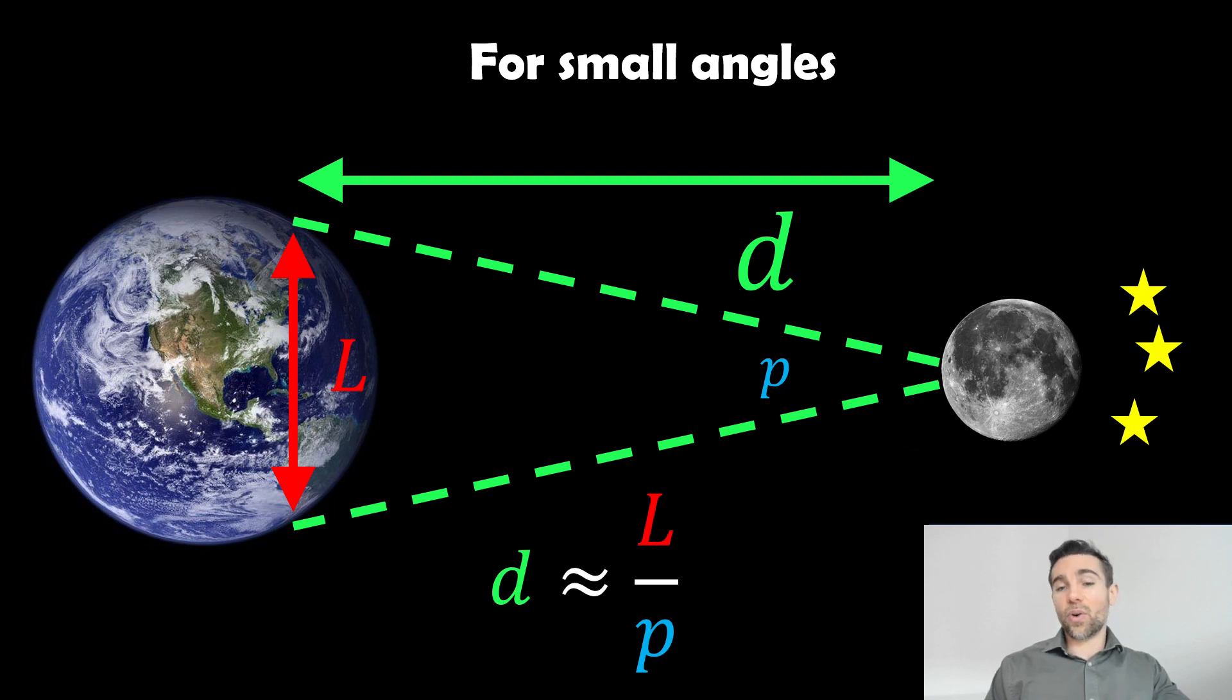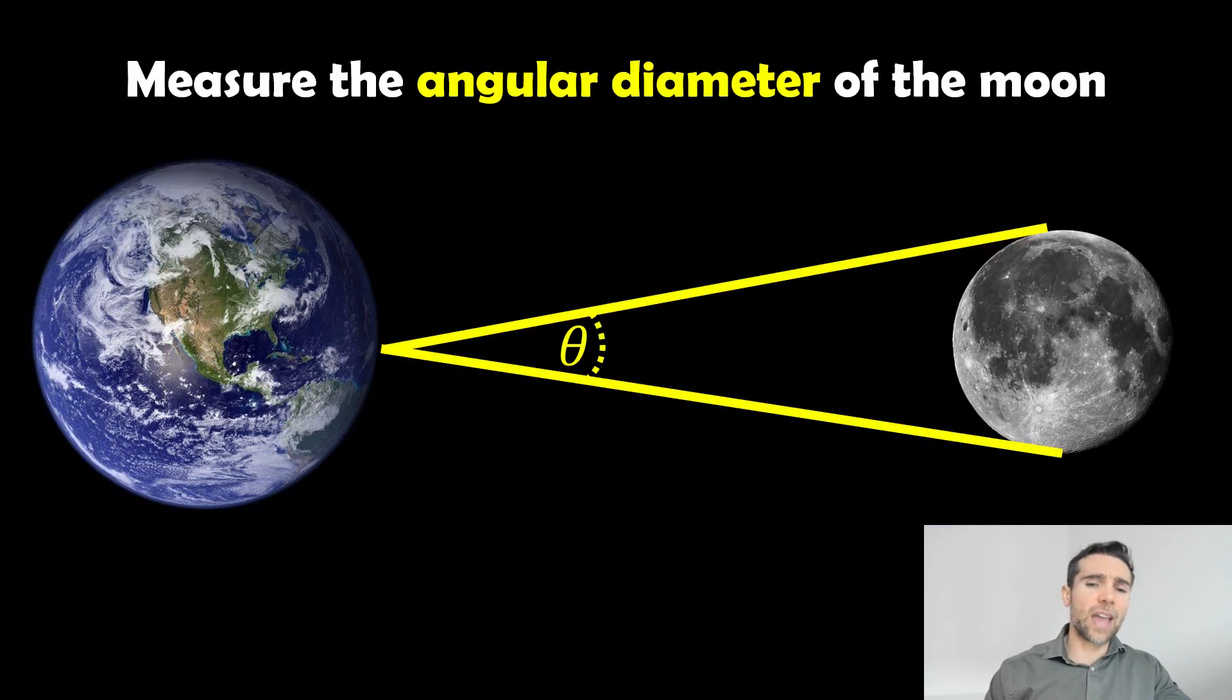We have this parallax angle then, which we can measure. The closer it is or further away, the angle is going to change. The equation for this, for small angles: the distance d is approximately equal to L over p, where L is the distance between the two observations, and p is our parallax angle. For small angles, it can be approximated like this. We use the same sort of method to get the diameter of the moon.